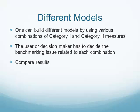You can build different models by using different combinations of Category 1 and Category 2 measures. And you can compare the results to see how their efficiency, or the composite measures, or their ratios change over different models. And from that, hopefully, you can gain some insights.